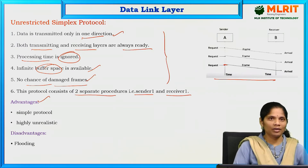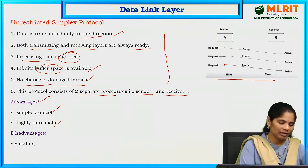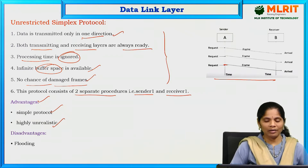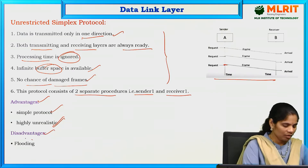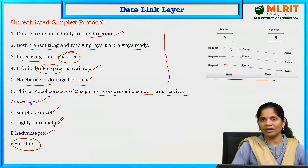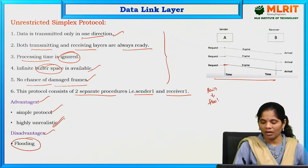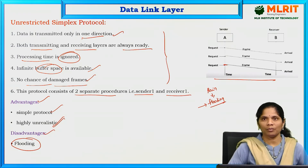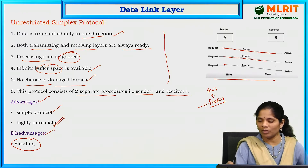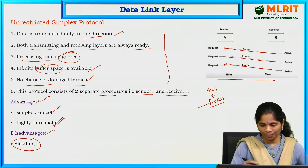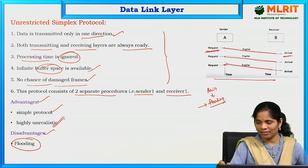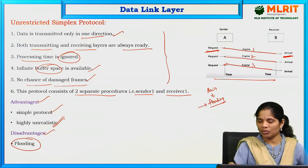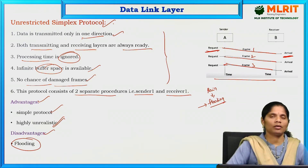What are the advantages? It is a simple protocol. At the same time, it is highly unrealistic because there are no rules or restrictions. Coming to disadvantages, the main one is flooding. Flooding means, just like in real life when heavy rain causes floods with a large amount of water coming at once, here the sender is sending an excessive number of data frames to the receiver. That is the disadvantage of the unrestricted simplex protocol. The sender sends requests and the receiver receives arrivals — frame 1, frame 2 — like this.